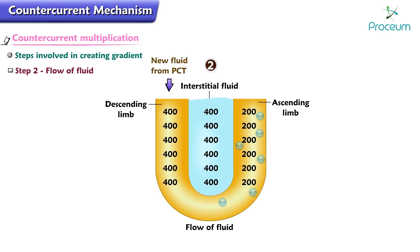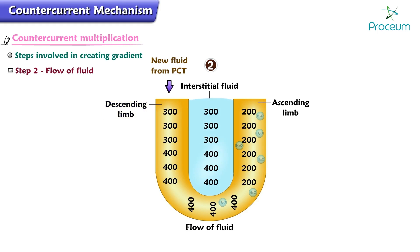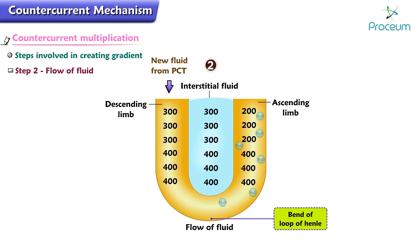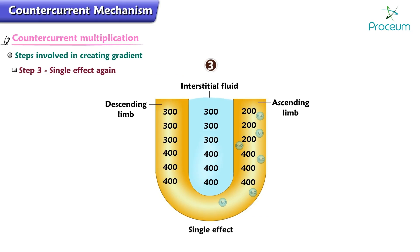Step two is the flow of fluid. New fluid with an osmolarity of 300 milliosmoles per liter enters the descending limb from the proximal tubule. As a result of this fluid shift, the high-osmolarity fluid in the descending limb is pushed further downwards to the bend of the loop of Henle, and an equal volume of fluid is displaced from the ascending limb. Even at this early stage, the corticopapillary osmotic gradient is beginning to develop.